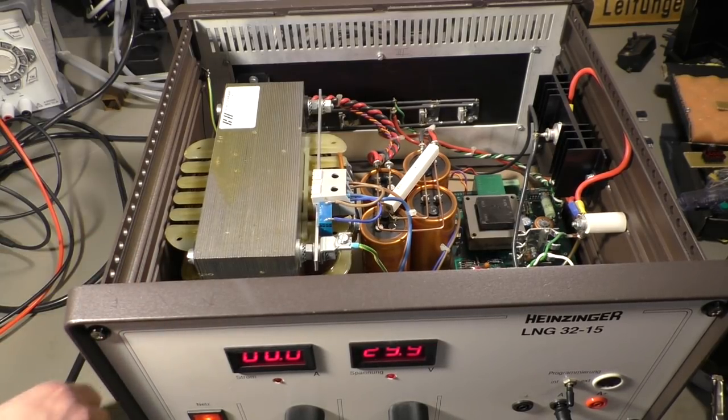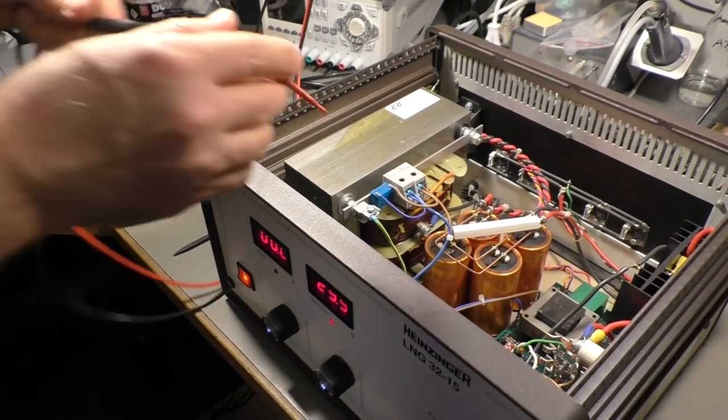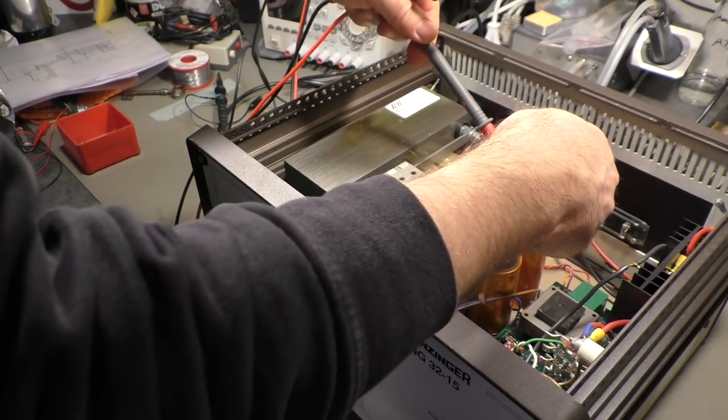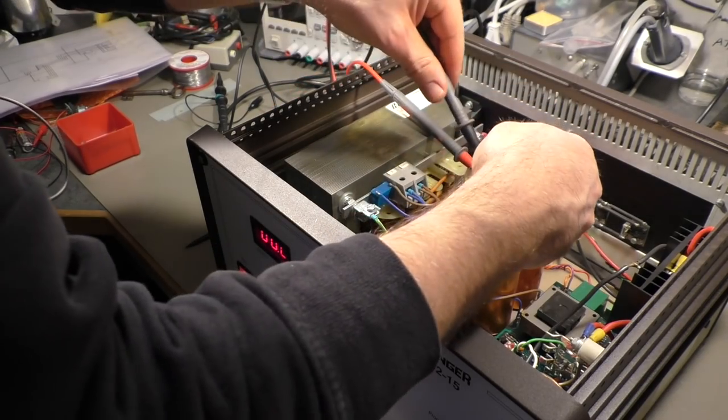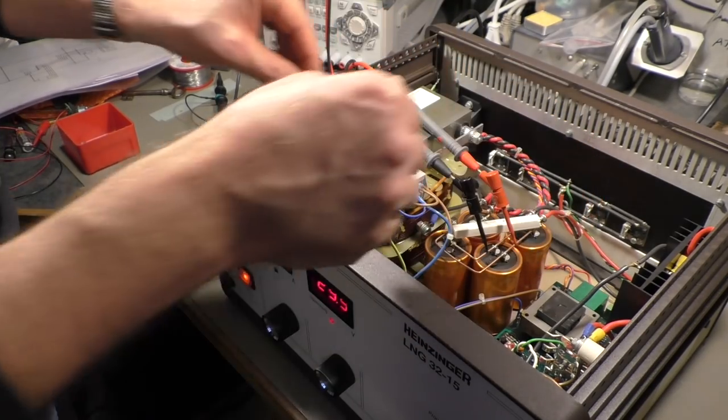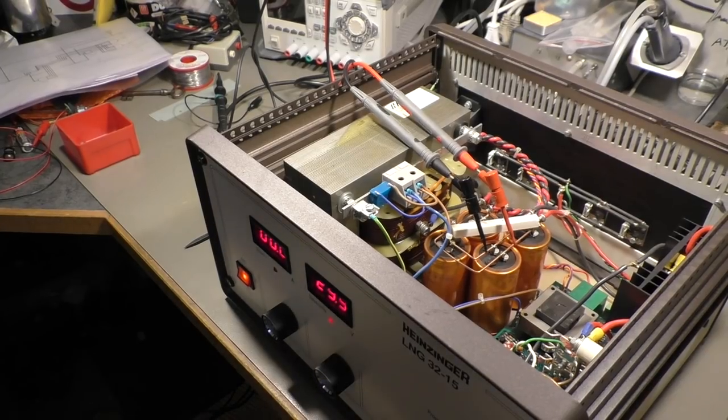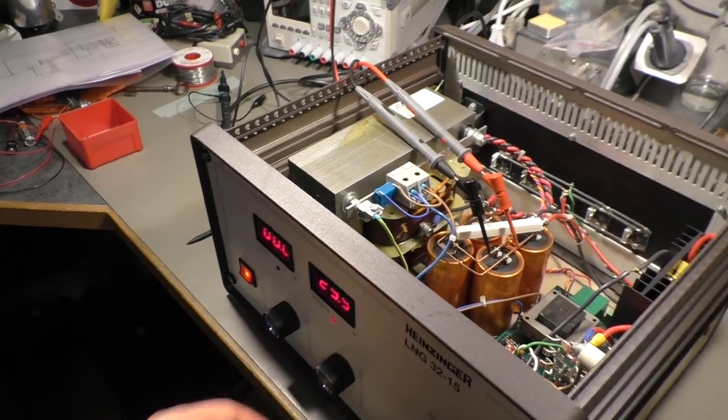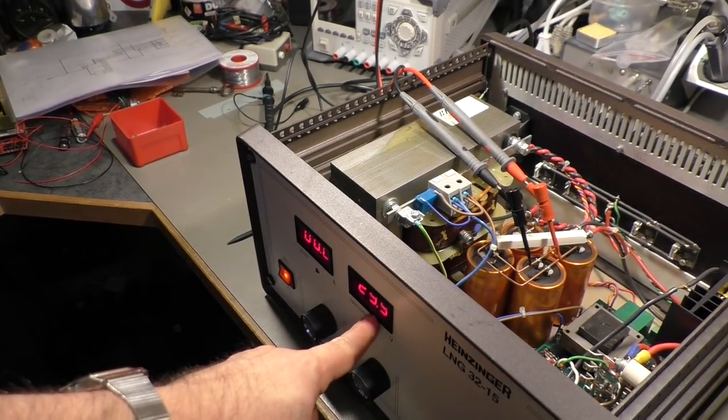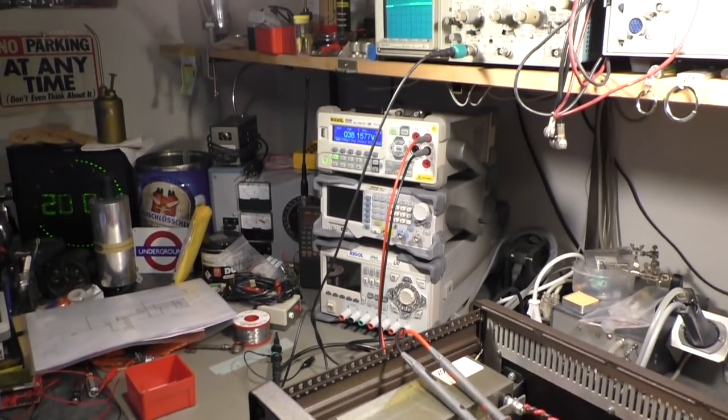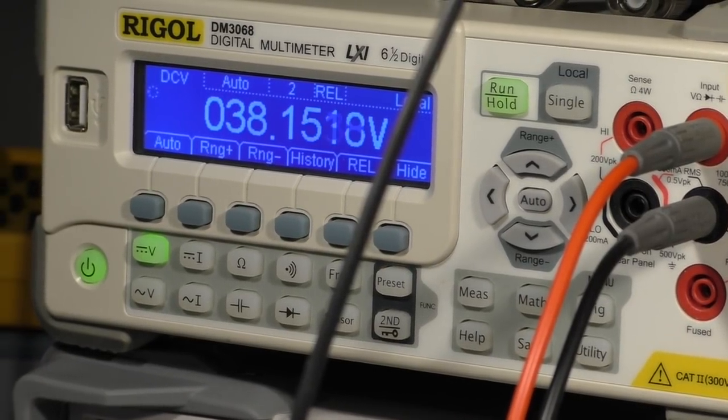I will show you that on the voltmeter. Maybe that's a little bit clearer. First I connect my voltmeter probes here. That's very convenient with these copper rails here. We see I have 30 volts on the output and I have 38 volts on the capacitors.